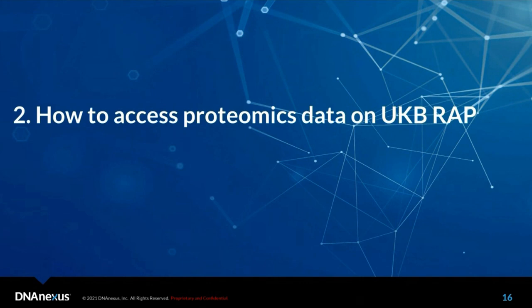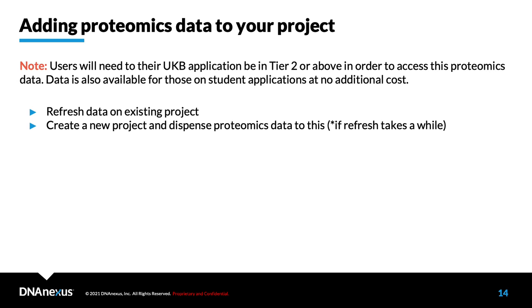Now let's talk about how to access this data on the platform. Your UK Biobank application will need at least tier two access, which you can verify by logging into your AMS account. Once verified, there are two ways to add the proteomics data to your project: refresh the data on an existing project, or create a new project and dispense the data to it — which is recommended if the refresh is taking a while.